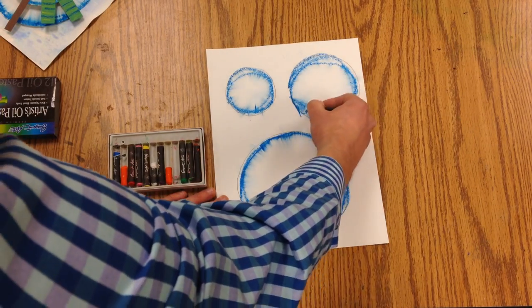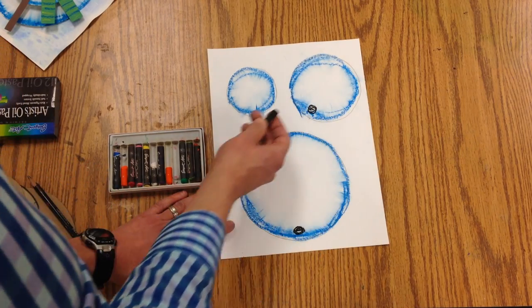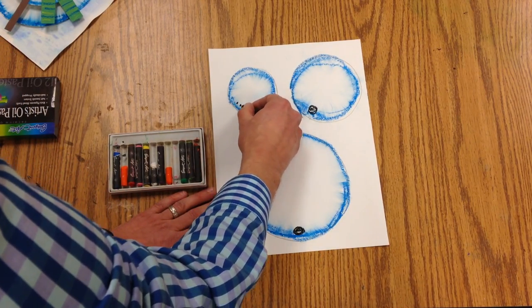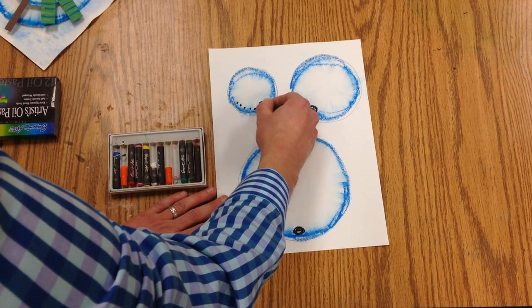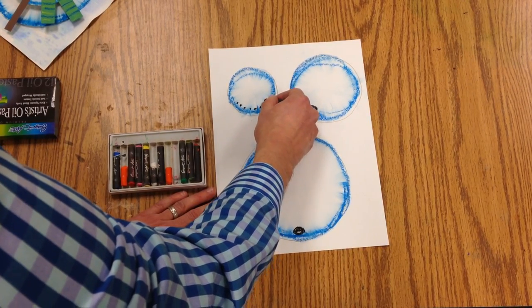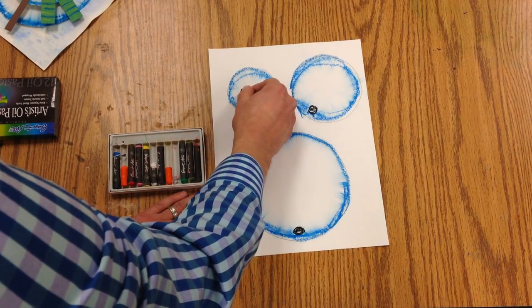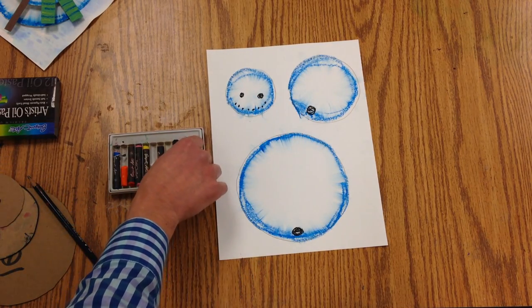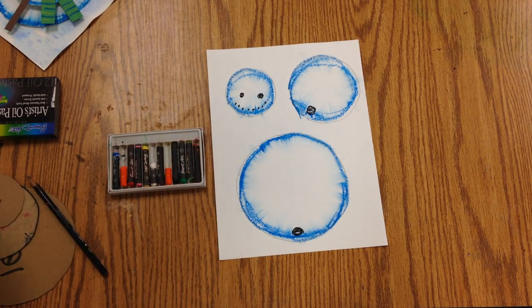And then we're going to put the mouth along this and then two eyes. We're going to leave the nose off of there because we're going to add that with a paper carrot later on.